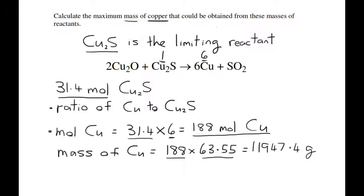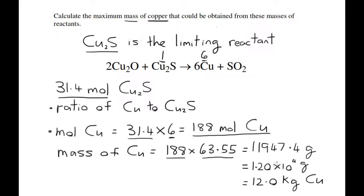Next, we have to think about significant figures. You should give your answer to three significant figures, so here we have 1.20 × 10⁴ grams. You can also convert to kilograms, giving a final answer of 12.0 kilograms of Cu.